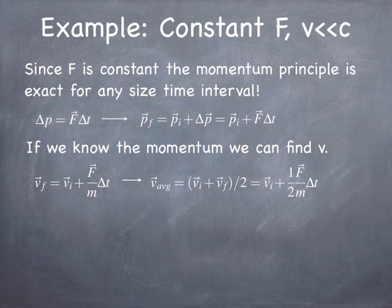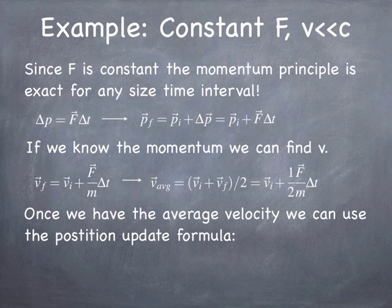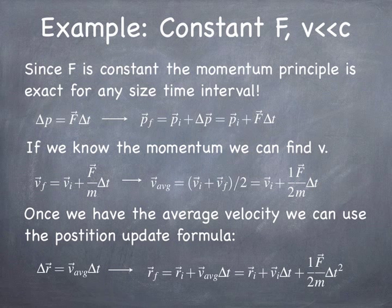If you've had physics before, you might recognize that force divided by the mass is simply the acceleration — the rate at which the velocity vector is changing. Once we have the average velocity, we use the position update formula: the change in position equals the average velocity times the change in time. Putting it all together, the final position equals the initial position plus the initial velocity times the change in time, plus one-half times the force over the mass times the change in time squared.